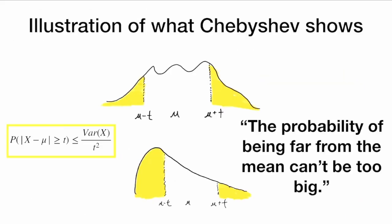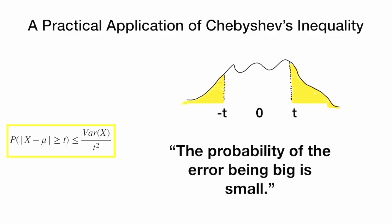Chebyshev's inequality tells us that the probability of being far away from the mean can't be too big. So Chebyshev's inequality can be expressed visually with these yellow areas, saying these yellow areas cannot be too big. One application would be to bound the error of a statistical estimator. If this is the distribution of our error term and we want the error to be zero on average, then we want to say the probability of getting a big error — these yellow probabilities — is very small. This is one application of Chebyshev's inequality.